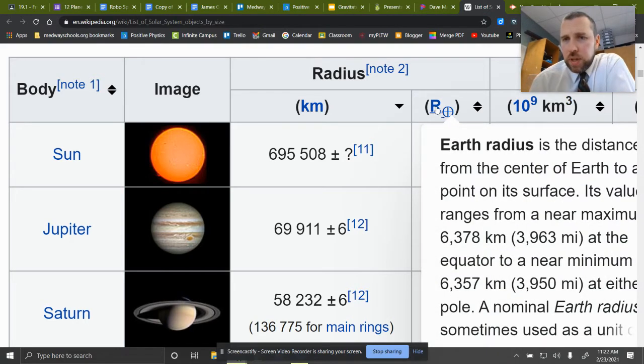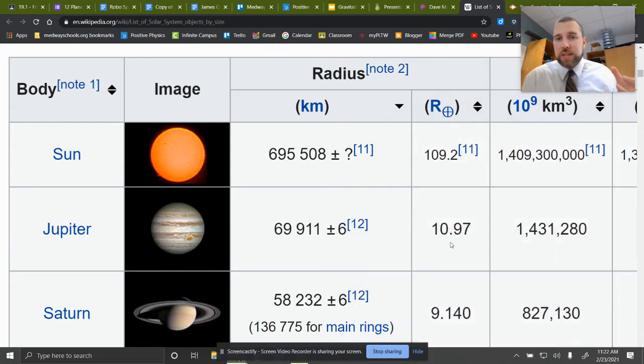This other column, the Earth radius, is what is it like in proportion to Earth, right? So if this is 10.97, it means the radius is 10.97 times larger than it is on Earth. And this is going to help us calculate this two different ways.